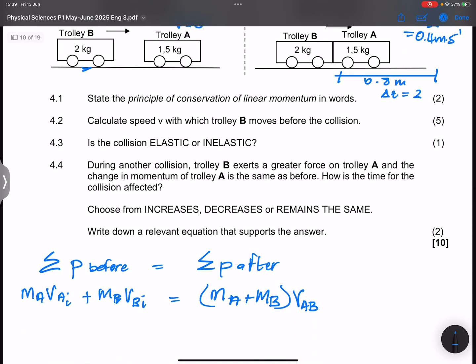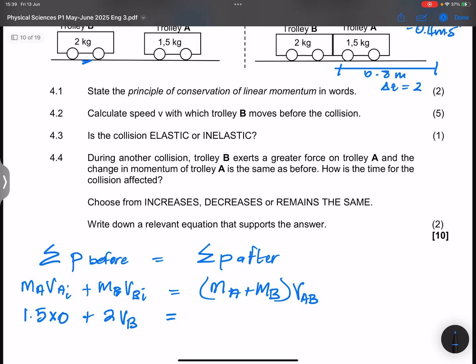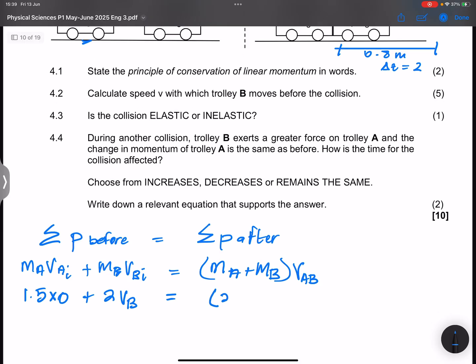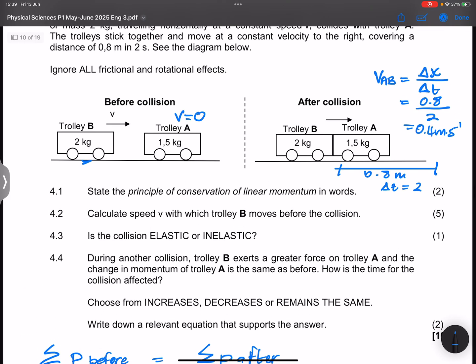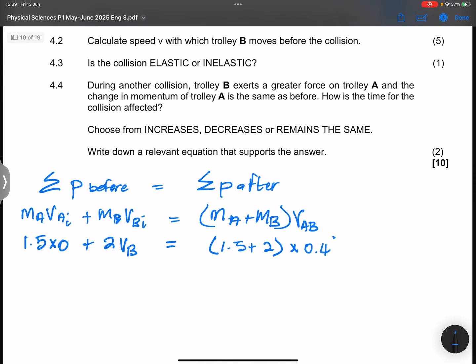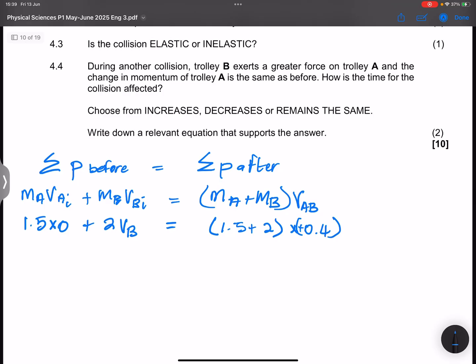So we know in this case that mass A is 1.5 kilograms multiplied by 0. Mass B is 2 kilograms, and the initial velocity is what we're looking for. In this case, the mass of A and mass of B, that's 1.5 plus 2, and this is multiplied by that velocity there, which is 0.4. Something that I neglected to say, it's important for us to choose a positive direction. I've assumed that the direction of motion of the trolleys is positive to the right. Remember that velocity is a vector, so we must quantify its magnitude and direction.